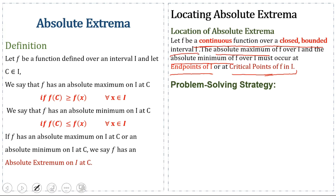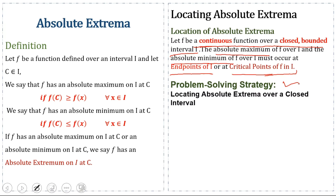The condition is that the function must be continuous over the closed or bounded interval I. I will provide a link in the video description about the continuity of a function. Next, we have the problem solving strategy: how we find the absolute maximum and absolute minimum — locating absolute extrema over a closed interval. The interval should be closed.